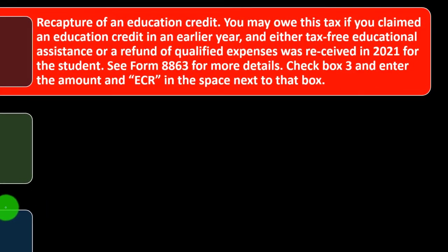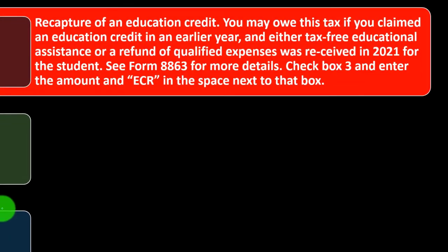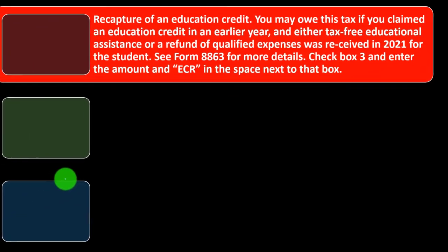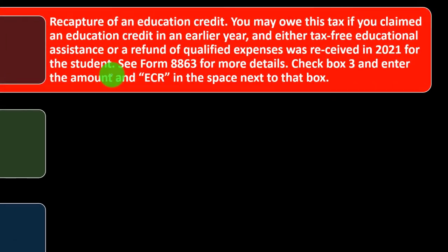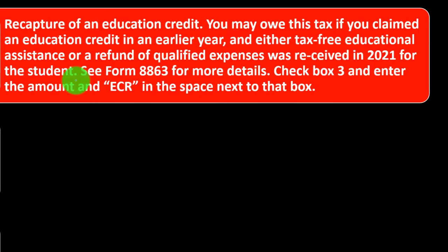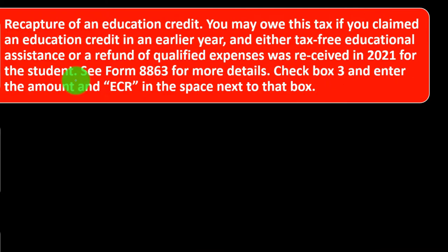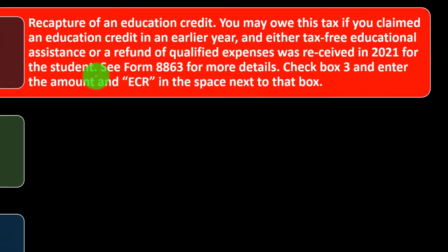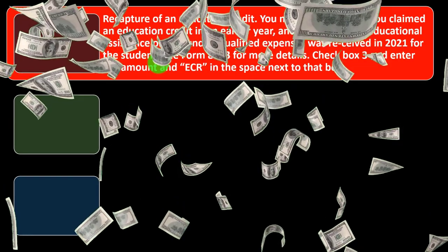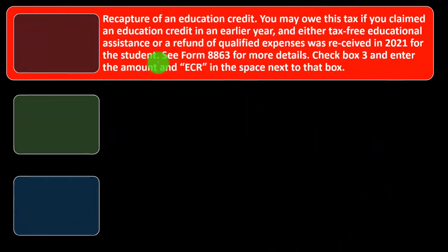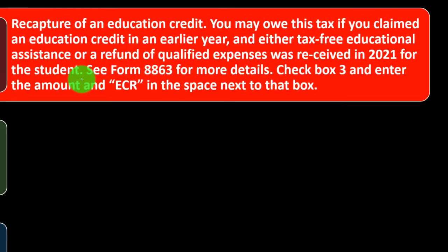Recapture of an education credit: you may owe this tax if you claimed an education credit in an earlier year and either tax-free educational assistance or a refund of qualified expenses was received in 2021 for the student. In other words, you claimed a credit in the prior year — a dollar-for-dollar benefit — and then got the money back in the following year. It's similar to the state deduction and state refund situation we discussed in a Schedule A context.